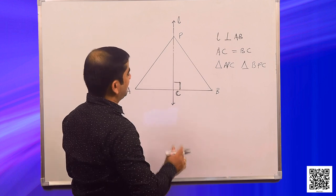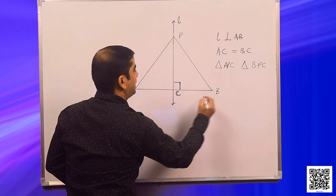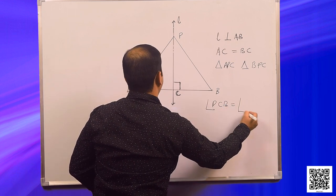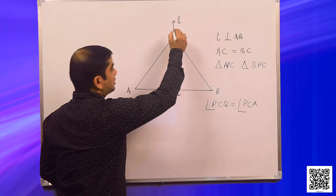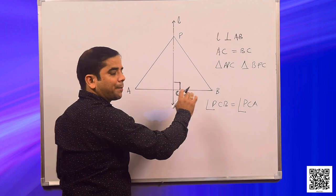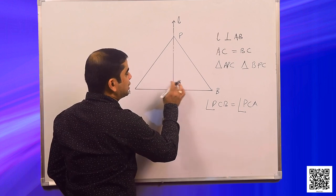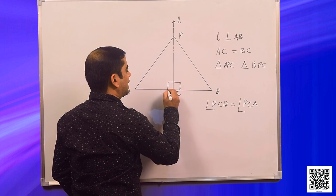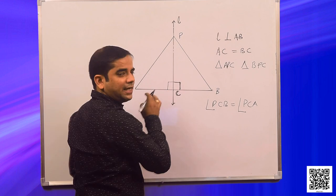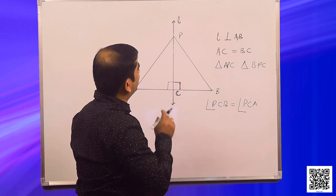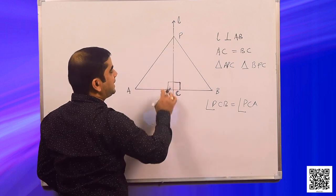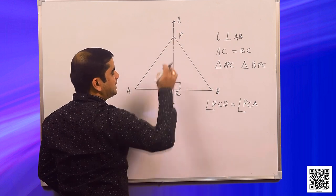Angle PCB is equal to angle PCA. Why? Because L is perpendicular to AB, that means PC is also perpendicular to AB, so these two angles are right angles. Also, PC is a common side for triangle APC and triangle BPC.